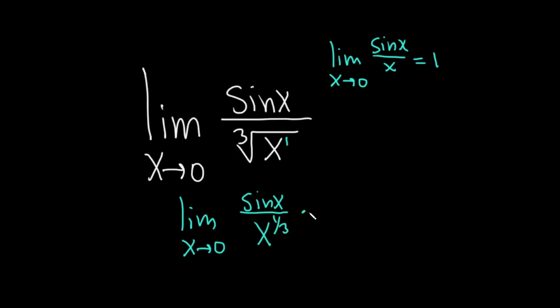And so now to make this an x, what we're going to do is we're going to multiply by x to the two thirds. And the reason is when you multiply x to the one third by x to the two thirds, you end up adding the exponents.